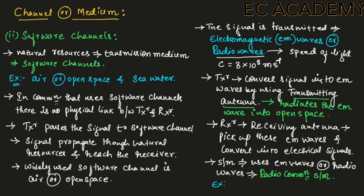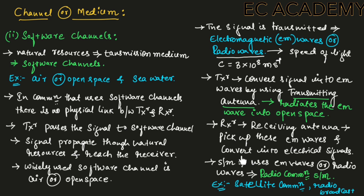Examples of radio communication systems are satellite communication, radio broadcasting, cellular mobile communication, and television transmission.